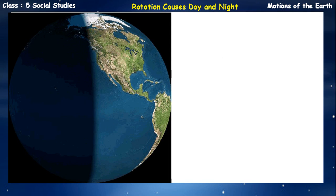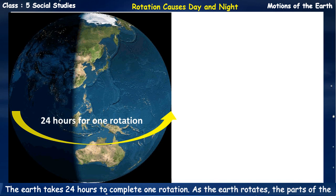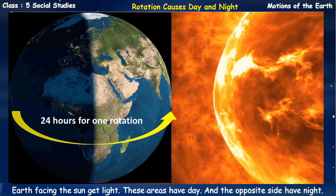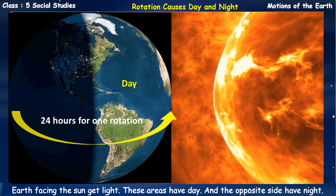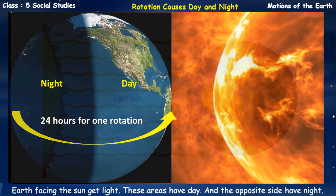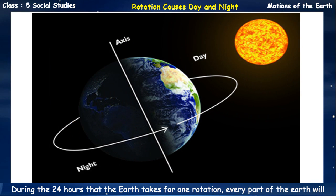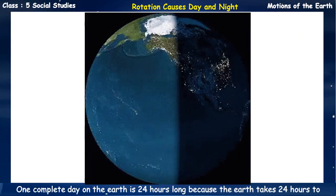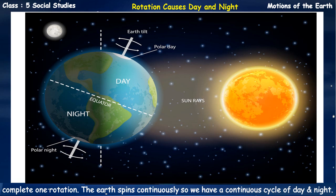Rotation causes day and night. The Earth takes 24 hours to complete one rotation. As the Earth rotates, the parts of the Earth facing the sun get light – these areas have day. The opposite side of the Earth, which does not get the sun's light, has night. During the 24 hours that the Earth takes for one rotation, every part of the Earth will have day and night. One complete day on the Earth is 24 hours long. The Earth spins continuously, so we have a continuous cycle of day and night.